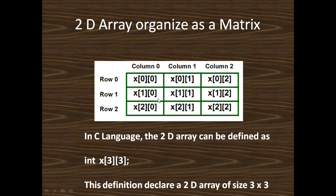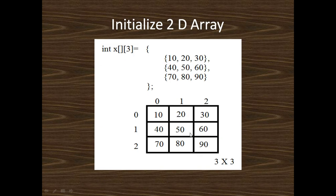In this way we can design a 3x3 matrix. In C language we can define a two-dimensional array as: int x[3][3]. Here the first bracket defines the rows and the second bracket defines the columns. This declaration declares a two-dimensional array of size 3x3.